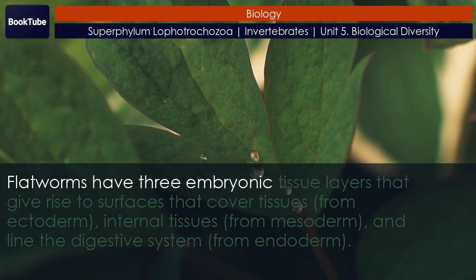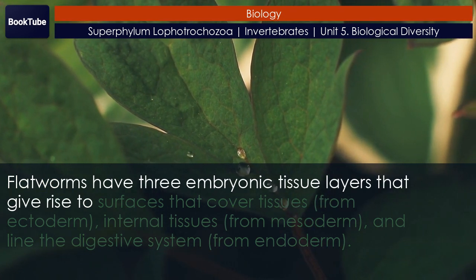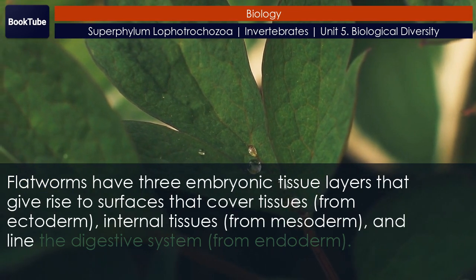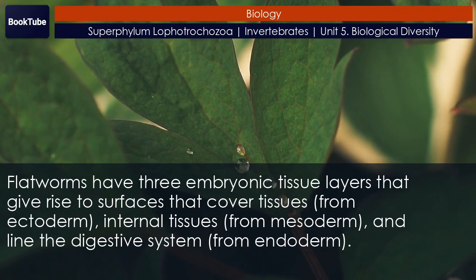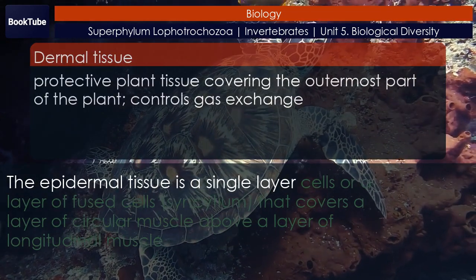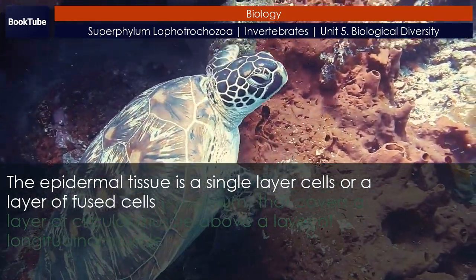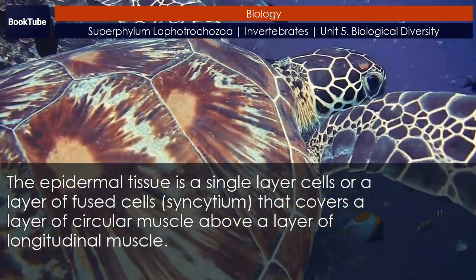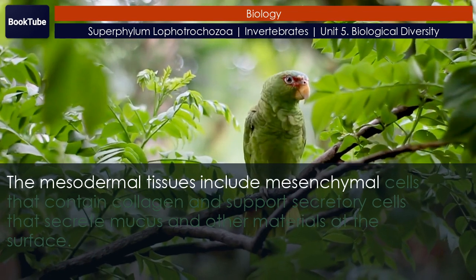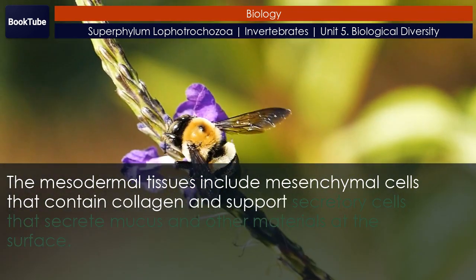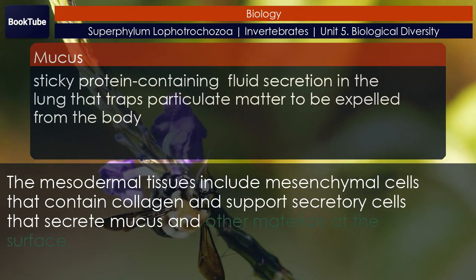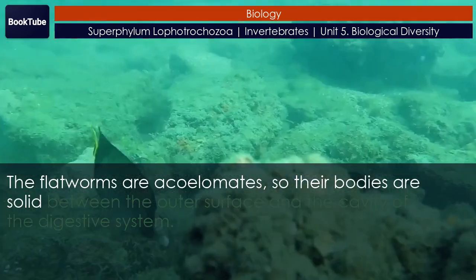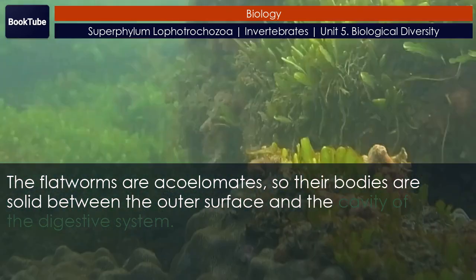Flatworms have three embryonic tissue layers: surfaces that cover tissues from ectoderm, internal tissues from mesoderm, and lining of the digestive system from endoderm. The epidermal tissue is a single layer of cells or a layer of fused cells, called a syncytium, that covers a layer of circular muscle above a layer of longitudinal muscle. The mesodermal tissues include mesenchymal cells that contain collagen and support secretory cells that secrete mucus and other materials at the surface. Flatworms are acoelomates, so their bodies are solid between the outer surface and the cavity of the digestive system.